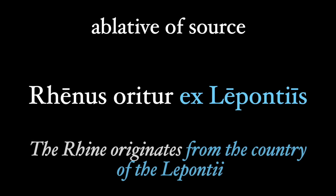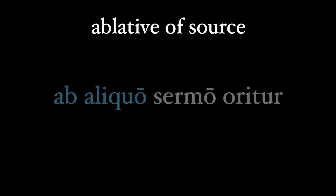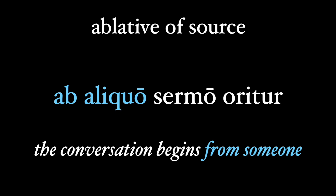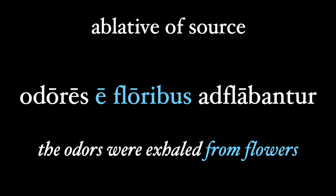We use the ablative case if we want to show the source of something, like a river. From Caesar: Rhenus oritur ex Lepontiis — the Rhine originates or comes from the country of the Lepontii. Or maybe we have a conversation: ab aliquo sermo oritur — the conversation begins from someone, someone being our source of the talk. Odores e floribus adflabatur — the odors were exhaled from flowers. Here the flowers are the source of the odors.